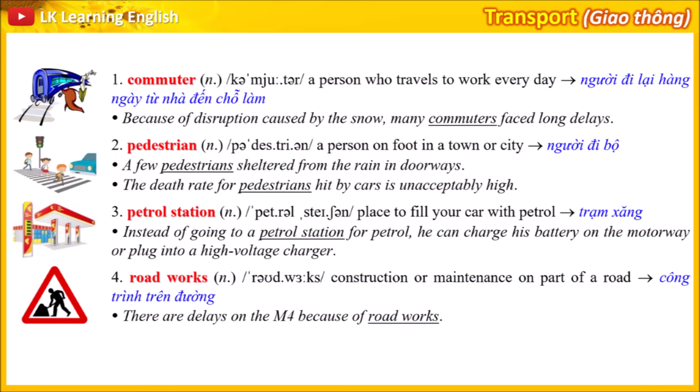Vocabulary: transport nouns, verbs and prepositions. 1. Commuter: a person who travels to work every day. Example: Because of disruption caused by the snow, many commuters faced long delays.